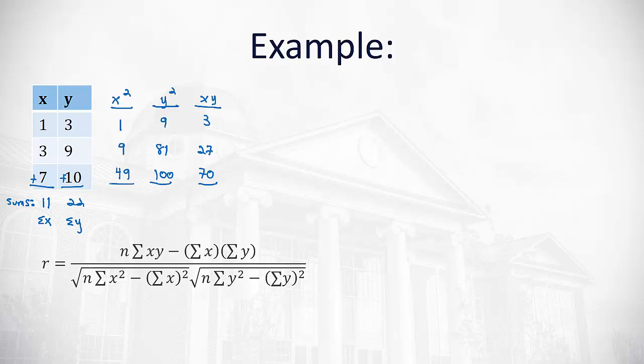We need these three sums as well in order to use our formula to find r. Adding up the x squareds, we end up with 59 is the sum of the x squareds. Adding up the y squareds, 190 is the sum of the y squareds. And adding up the x y's, we end up with 100 is the sum of the x y's.